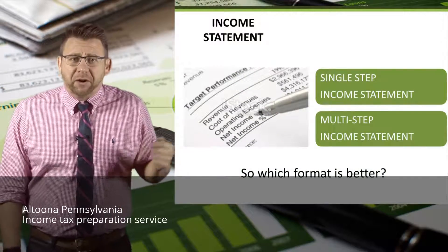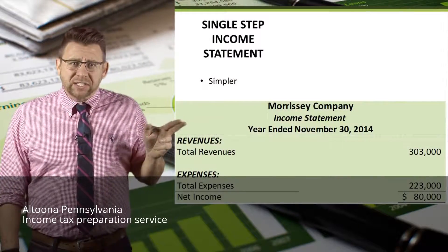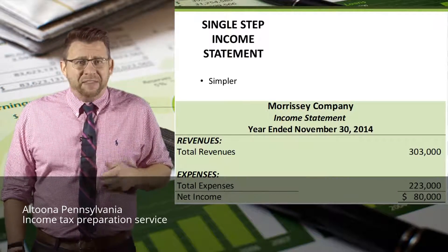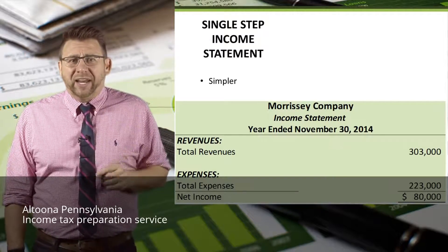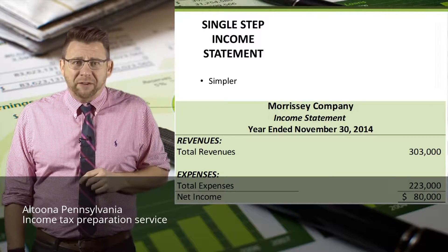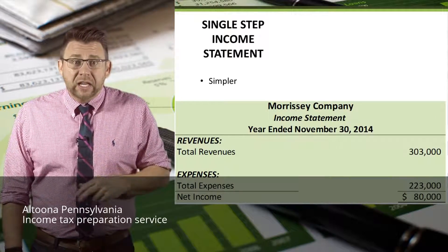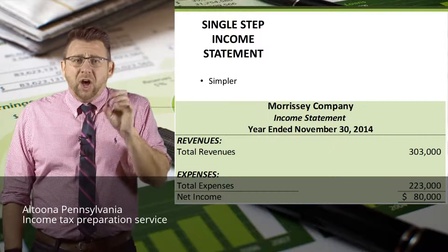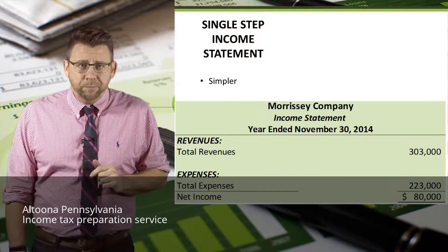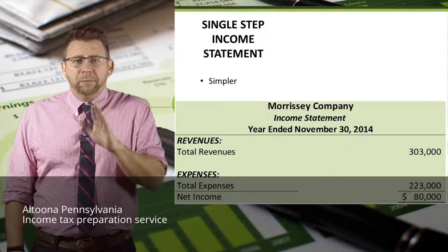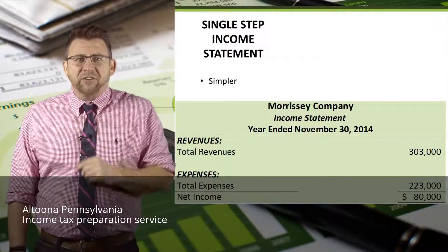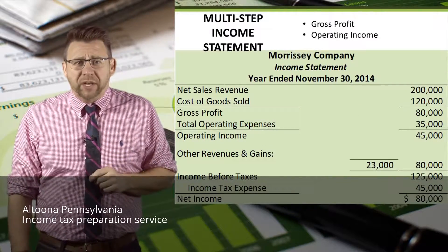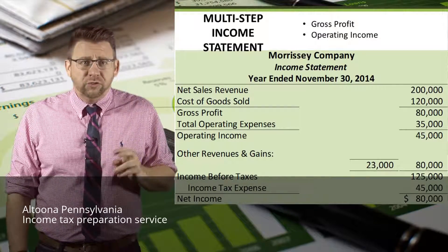So which format is better? Well, it depends. The single-step is easier to read and understand. For service firms which don't have gross profit, and where there isn't a lot of benefit from distinguishing between operating and non-operating activities, it's the simple way to express profitability. But there are drawbacks. In the example, this firm earned $80,000 of net income on $303,000 of revenue — but how repeatable is that next year? Let's answer that by looking at the multi-step format, which gives us better information about gross profit and operating income. That is why non-service firms use this format.